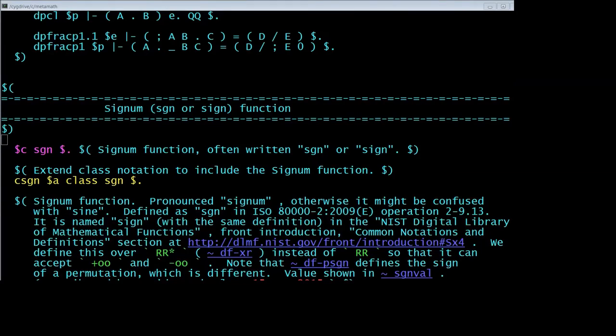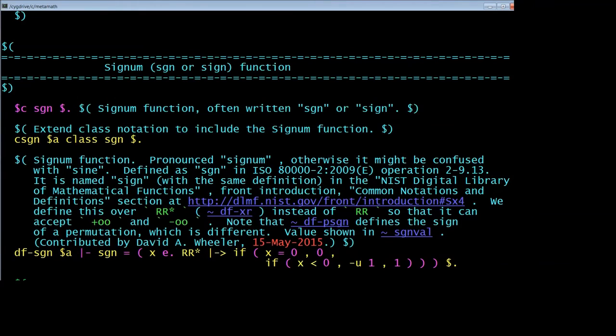We now need to actually define it. I should note that I'm just using an ordinary text editor. I happen to be using Vim, which has some syntax highlighting, but you can edit with any text editor. So first of all, we're going to say that there's a constant called sgn, or signum. Extend the class notation to include it.